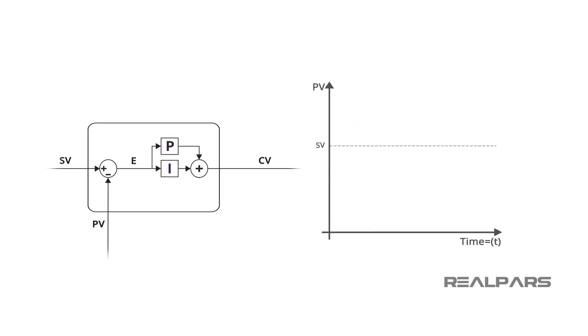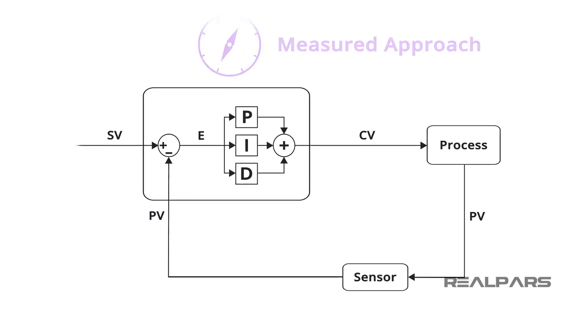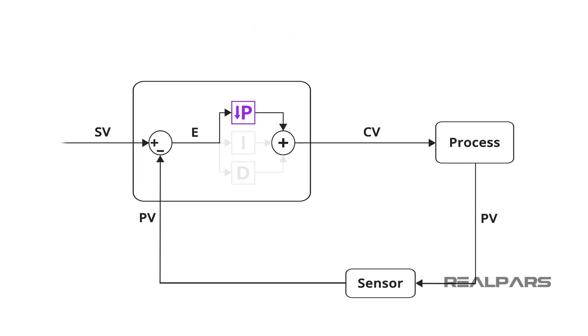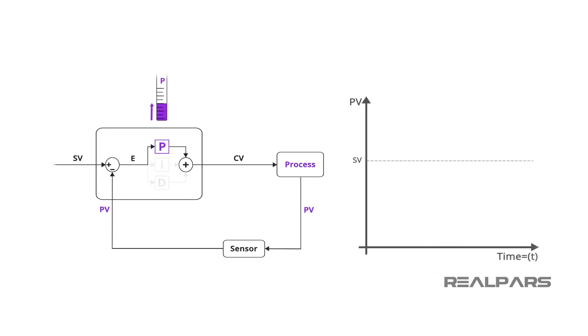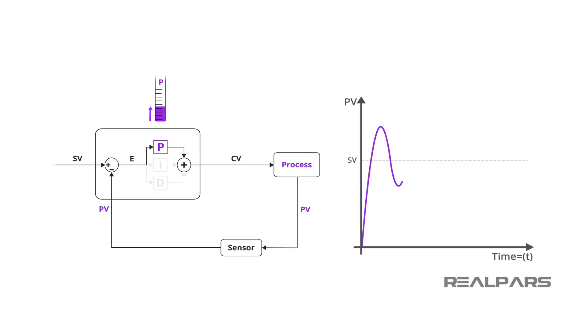Adjust only one parameter at a time and observe the results. Continue in this vein until you have achieved a stable process. A more measured approach is to start with a low gain with integral and derivative disabled. Watch the process and begin incrementally adjusting the gain by doubling the value. When the process begins to oscillate, adjust the gain value down by 50%. Employ a small integral value and watch the process. Double the value incrementally until oscillation occurs, then cut the integral by 50%. At this point, you should be somewhere in the neighborhood and can begin the fine-tuning process.